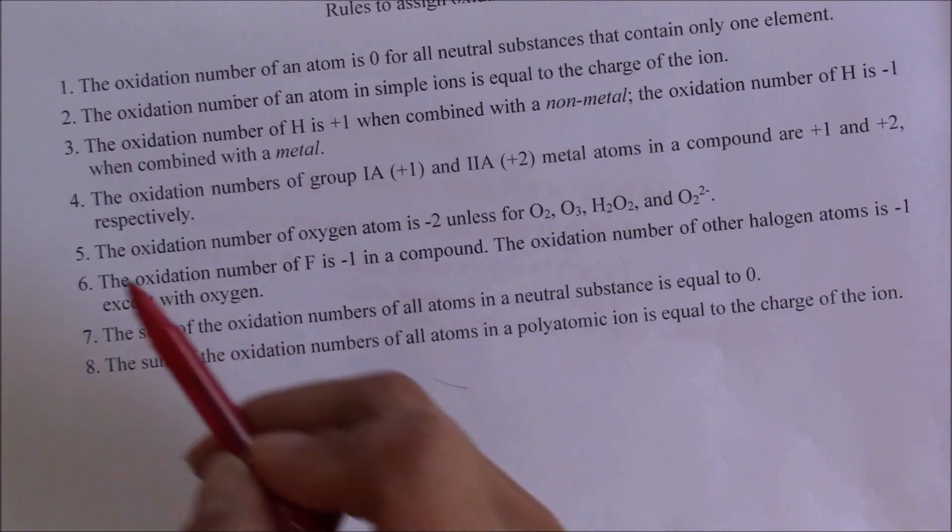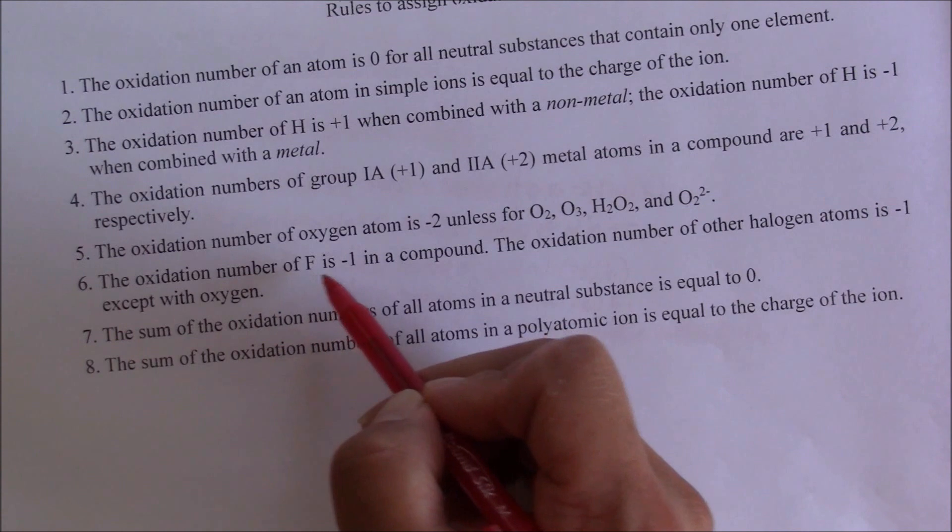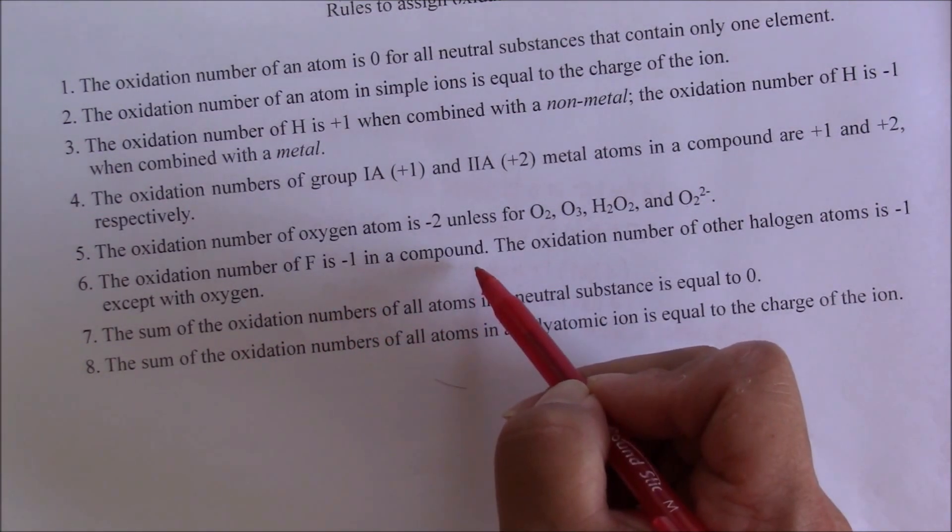Then, we can use rule number 6 to determine that the oxidation number of fluorine is negative 1 in a compound or in a polyatomic ion. Please make a correction.